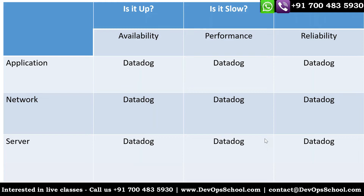Observability means everything. We call it MELT - remember this keyword: M-E-L-T. M for Metrics, E for Events, L for Logs, and T for Traces. Metrics will come from integrations and platforms. Events will come from the platform and any framework. Logs will come from various sources - application logs, system logs, network logs, security logs. Traces relate to application performance management, APM. You have to gather everything - and Datadog supports all of this.